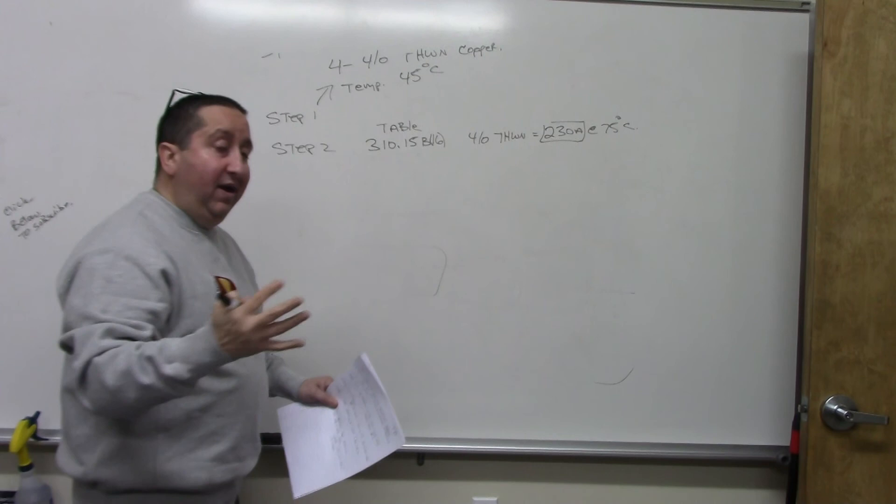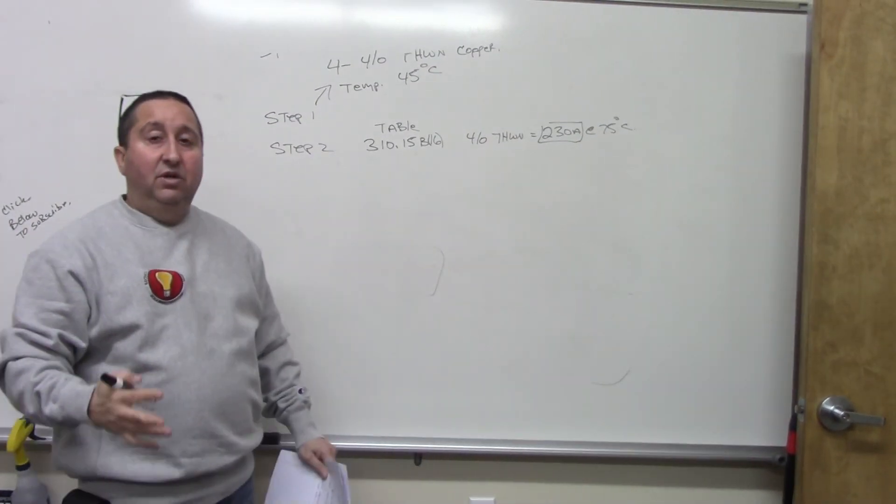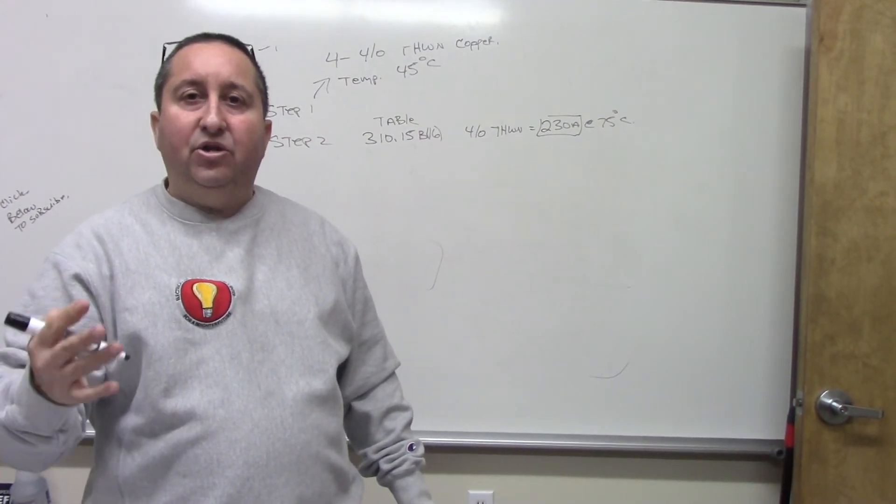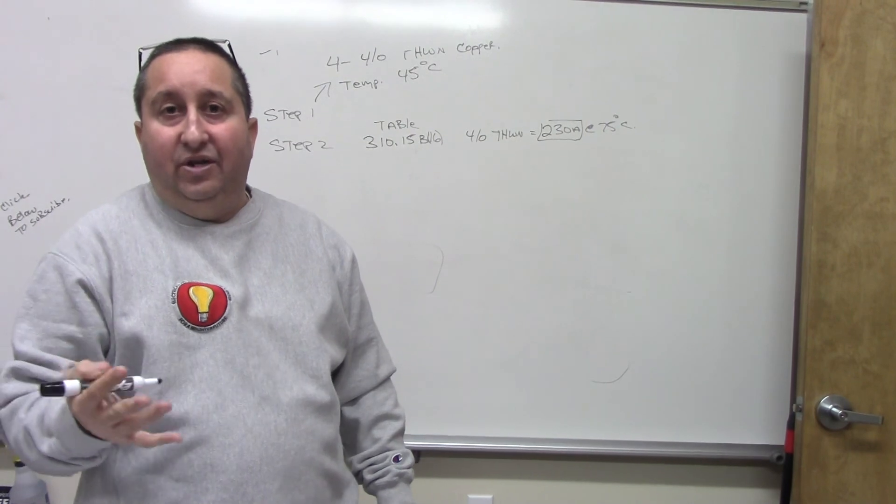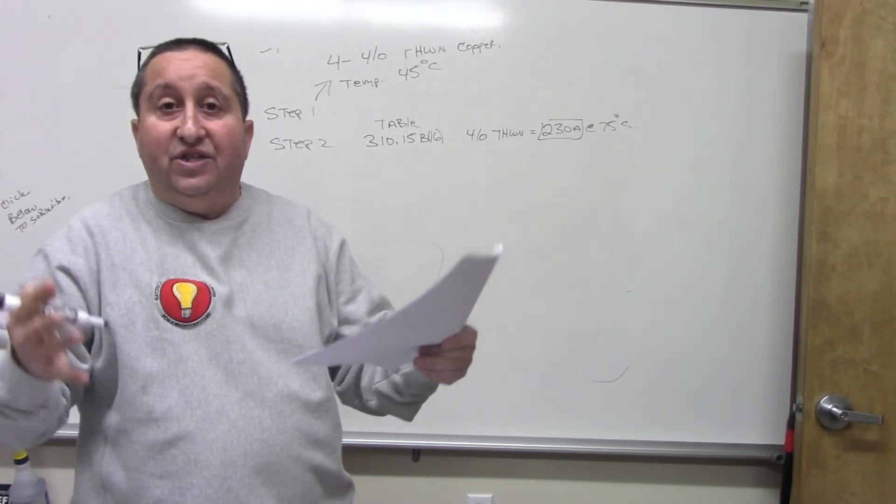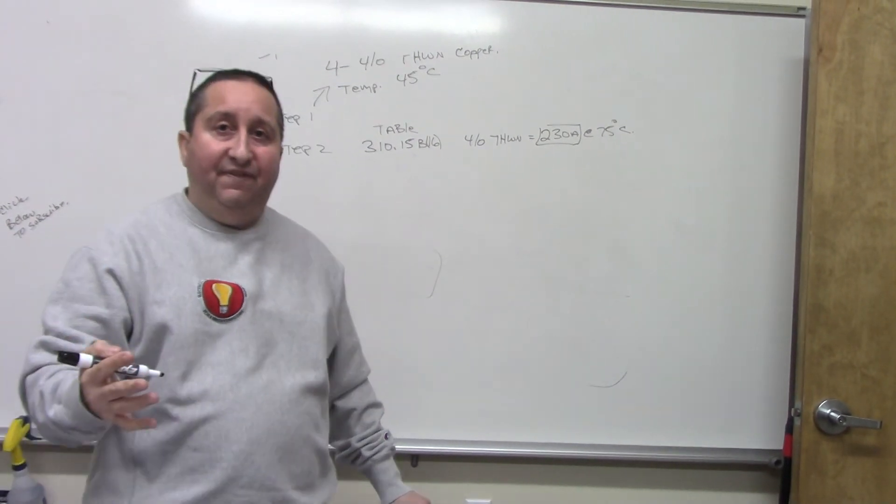But the problem is, we have four current carrying conductors. Once you put ampacity on a conductor, you're creating heat. That's what ampacity is - basic foundation, it's just heat. So since you have four, you're creating heat, so there's an adjustment factor.